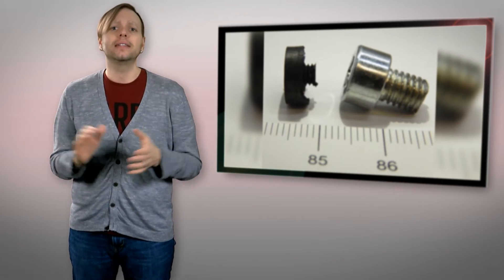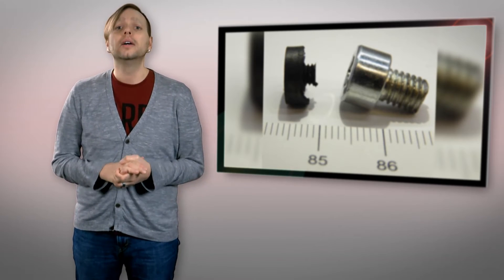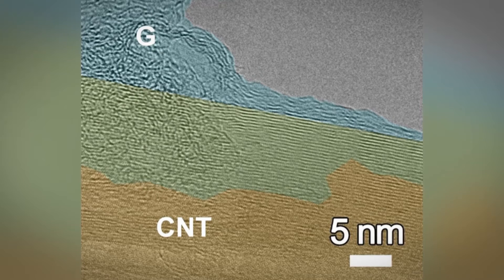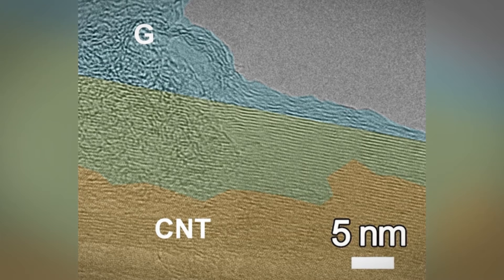The team mixed the nanotubes with a powdered nickel catalyst and sugar to provide the carbon. Dried pellets of the substance were then pressed in a steel die and the carbon in the sugar was turned into graphene through chemical vapor deposition. All remaining traces of nickel were removed to reveal a pure carbon piece of graphene foam.